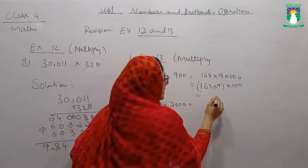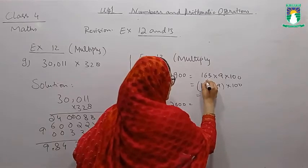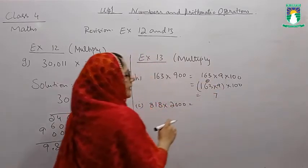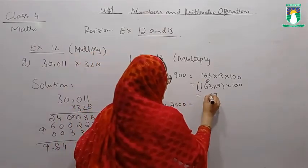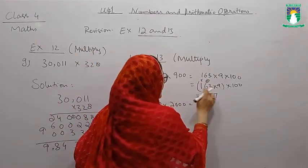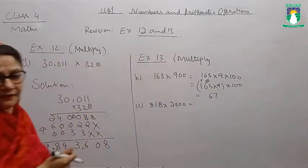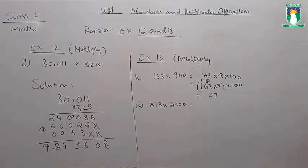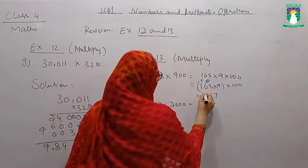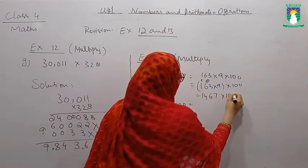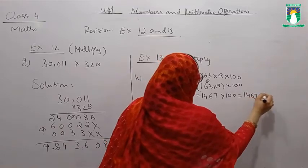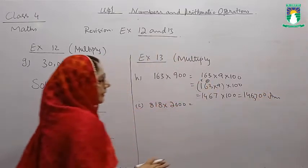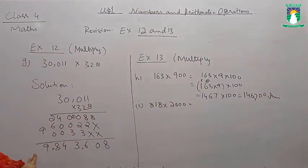9 threes are 27, 2 carry. 9 sixes are 54 plus 2 is 56, 5 carry. 9 ones are 9, 9 plus 5 is 14. So 1467 multiplied by 100 is equal to 146,700. We have to solve it without doing the long multiplication.